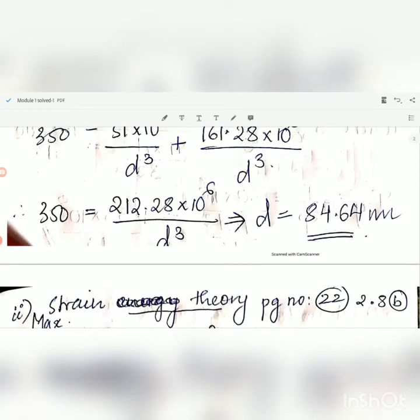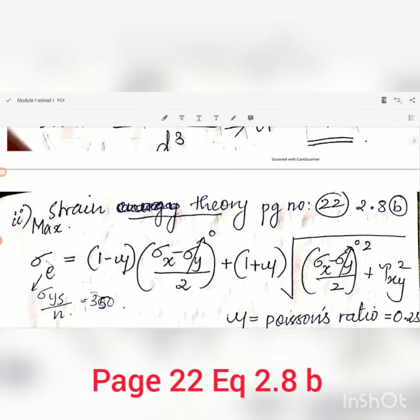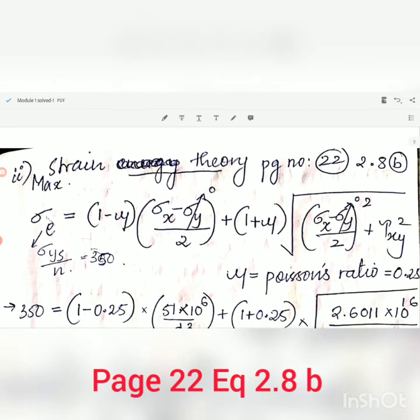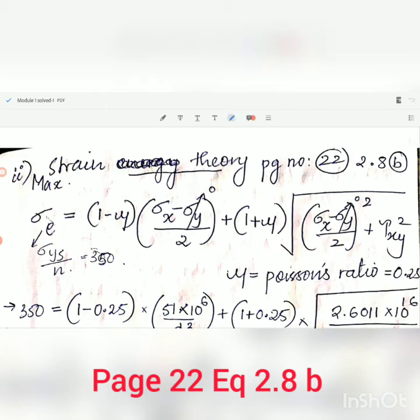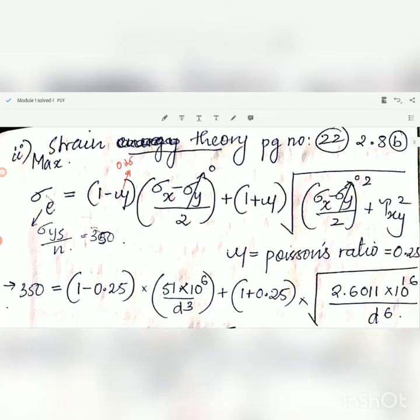In this question we are asked to find the values using two different theories. Now we will go for the second theory, that is maximum strain theory. I selected this one because the Poisson ratio is given. Here sigma y is known, mu is the Poisson ratio. Poisson ratio is given as 0.25.